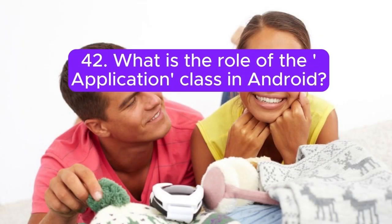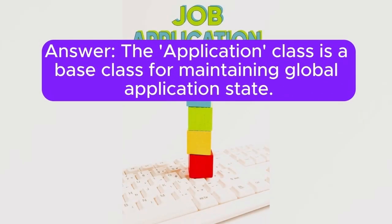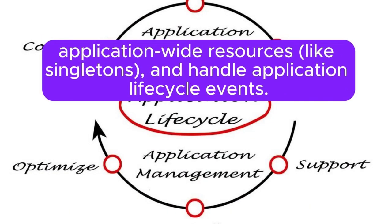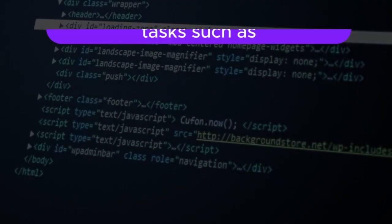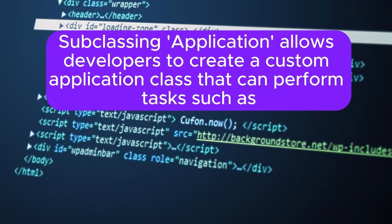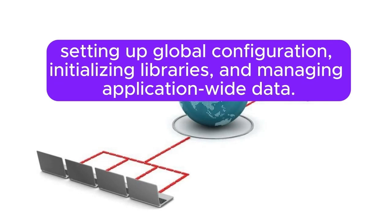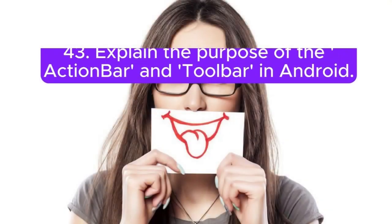Question 42: What is the role of the Application class in Android? The Application class is a base class for maintaining global application state. It is used to perform initialization tasks, manage application-wide resources like singletons, and handle application lifecycle events. Subclassing Application allows developers to set up global configuration, initialize libraries, and manage application-wide data.